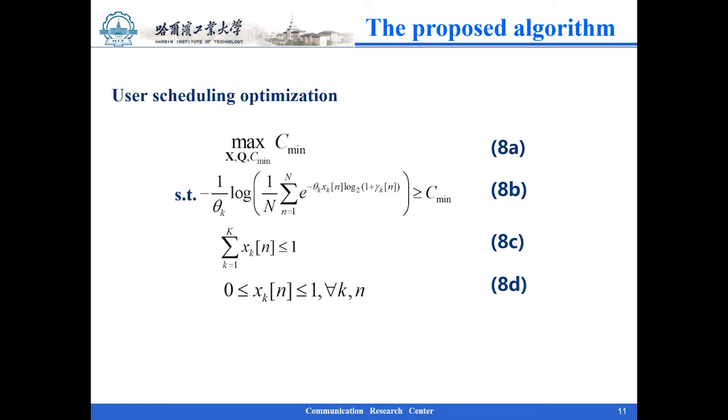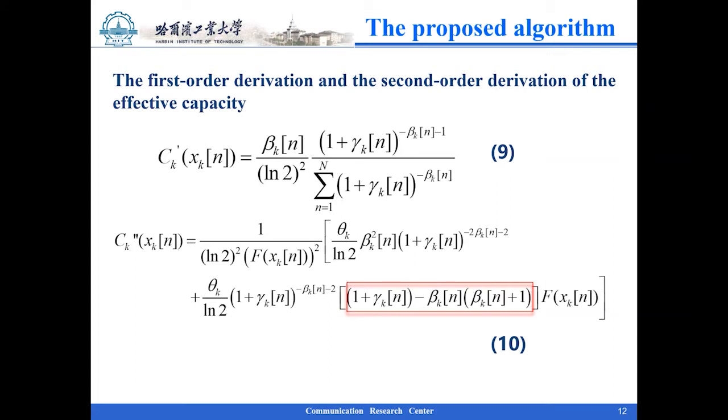The first order derivation and the second order derivation of the effective capacity in the period with respect to any variable x are as follows. The positive or negative of equation 10 depends on the term in the red box. Since this paper aims at the general user, the QoS index is usually in the range of 0 to 0.1. The second order derivation is negative, which means that the objective function is concave.